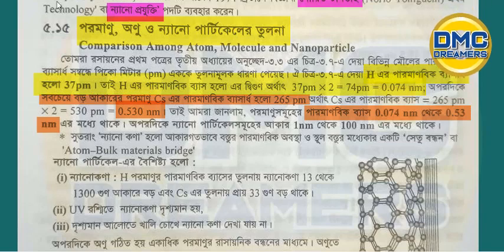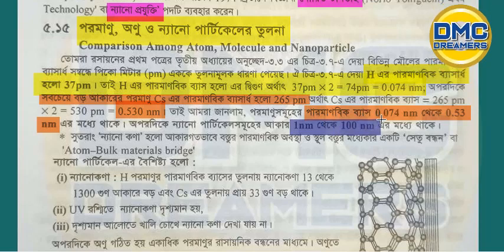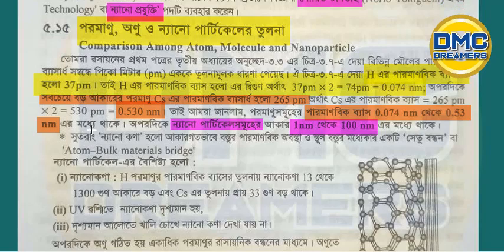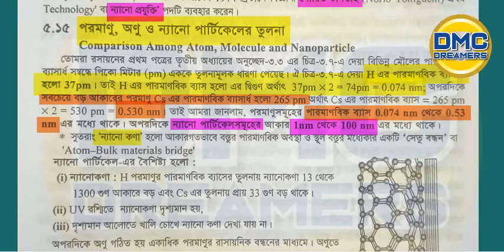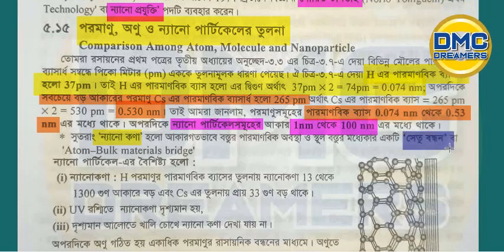We know that the nanometer range is 1 to 100. So the nanoparticle is defined as 1 to 100 nanometer. Our nanometer scale connects from 0.074 nanometer up through the atom to bulk material.